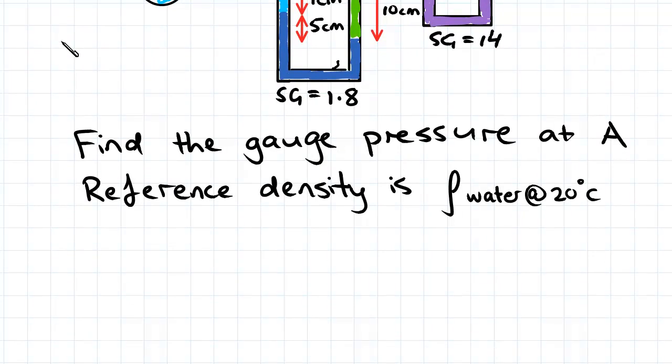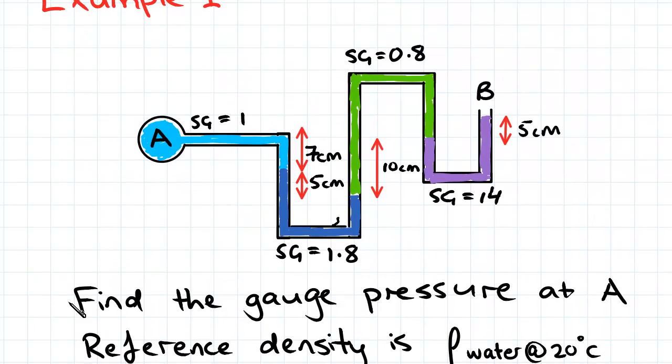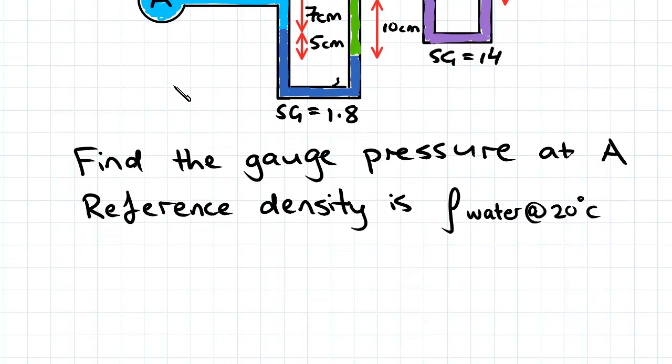So here's our example. We've got the U-tube manometer here, we've been given all the specific gravities of each of the fluids—there's four fluids here—and we've been given the height difference between various points in the manometer. We've been asked to find the gauge pressure at A, and we've been given the reference density, which is ρ water at 20 degrees Celsius.